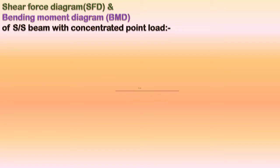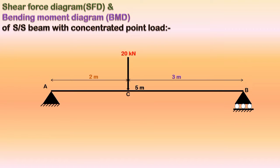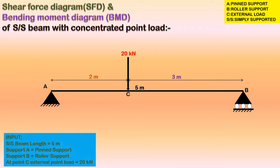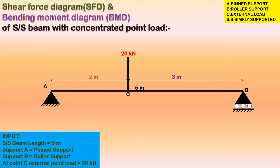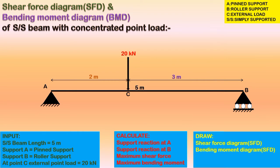Hello friends, today I will be discussing the shear force diagram and bending moment diagram of a simply supported beam which has an external point load at location C. A is the pin support and B is the roller support. We have to calculate the support reactions at A and B, the maximum shear force, the maximum bending moment, and draw the shear force diagram and bending moment diagram.